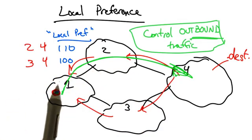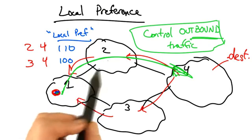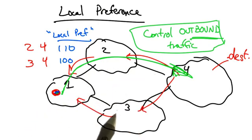In this way, an operator can adjust local preference values on incoming routes to control outbound traffic, or to control how traffic leaves its autonomous system and routes to a destination.